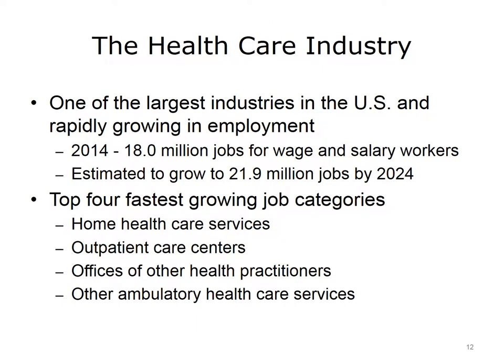The health care industry is one of the largest industries in the U.S. In 2014, 18 million jobs for wage and salary workers came from this industry, estimated to grow to 21.9 million jobs by 2024. The top four fastest-growing job categories include home health care services, outpatient care centers, offices of other health practitioners, and other ambulatory health care services.